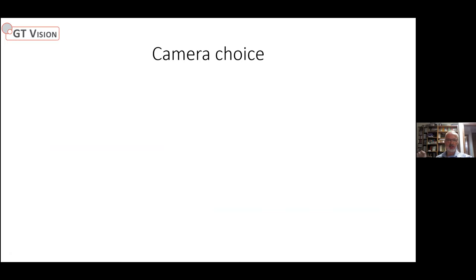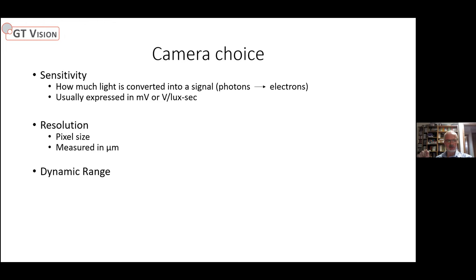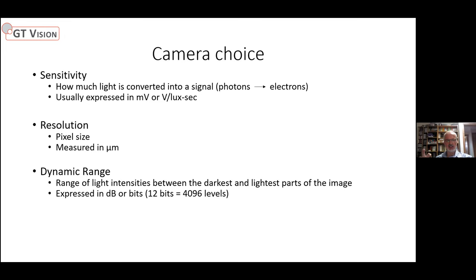In terms of camera choice, there are four parameters to consider. First is sensitivity — how much light is converted into a signal, measured in millivolts or volts per lux-second; more is better. Second is resolution, a measure of pixel size in microns — smaller pixels give higher resolution. Third is dynamic range, the range of light intensities between darkest and lightest parts of the image, expressed in decibels or bits. For example, a 12-bit camera has 4096 levels of dynamic range.